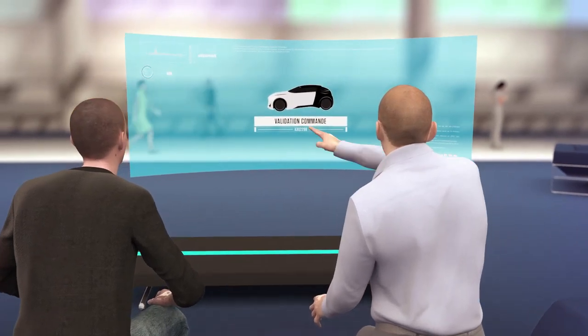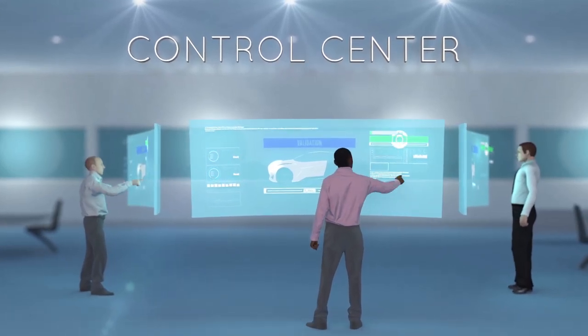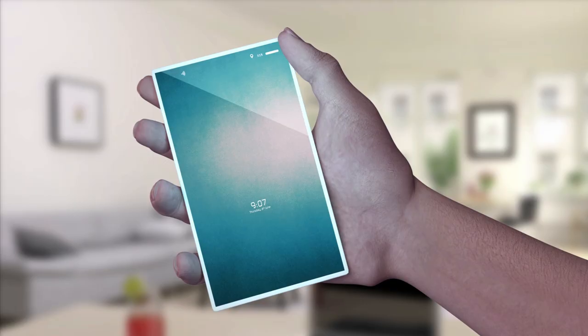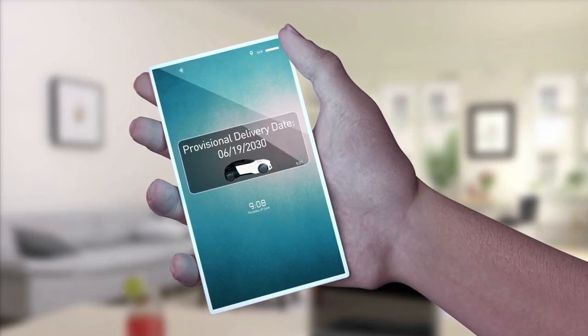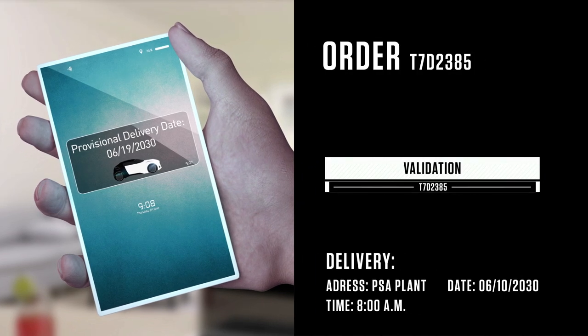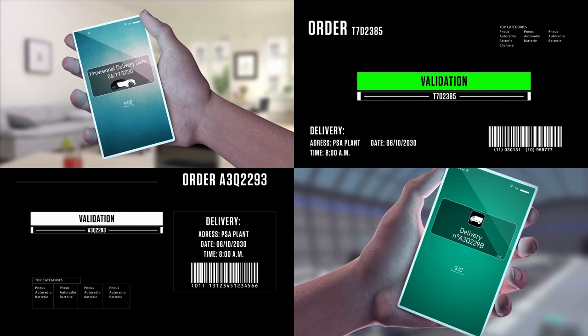Every time an order is placed, the vehicle production process is triggered in real time. The date and sequence of production are planned at the control center. The customer receives a provisional delivery date notification for the vehicle. The parts are automatically ordered from suppliers and their delivery is scheduled to fit the delivery due date.